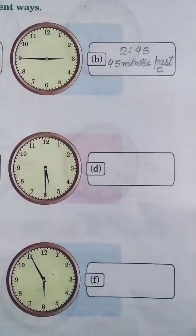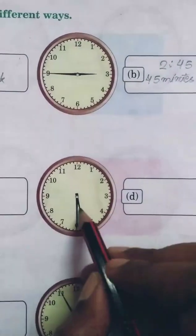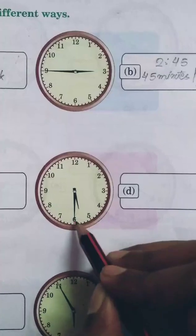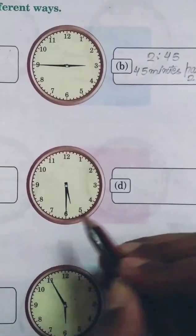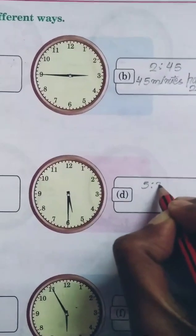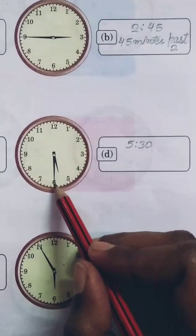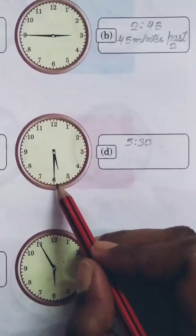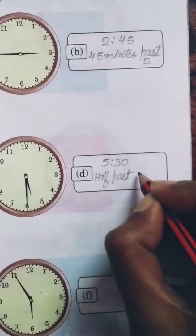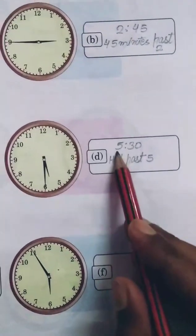Question D: the minute hand is at 6 and the hour hand is between 5 and 6, so the time is 5:30. Since 30 is half of 60, we write it as 'half past 5.'